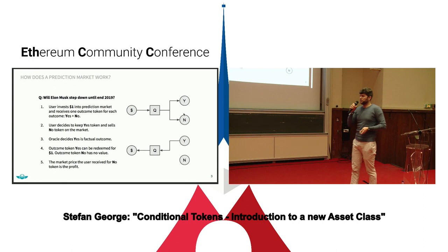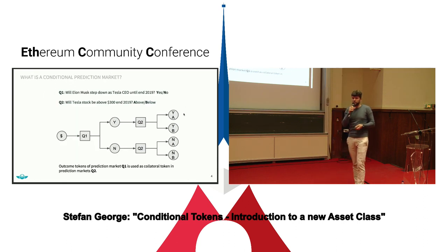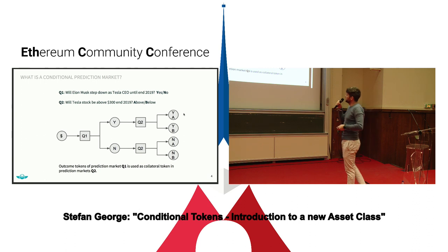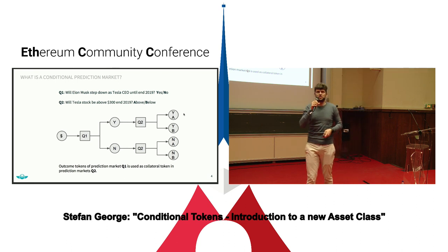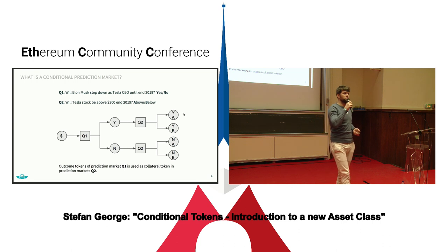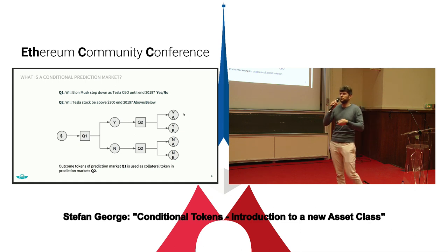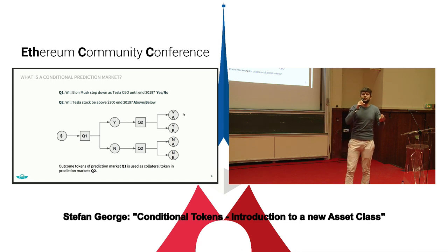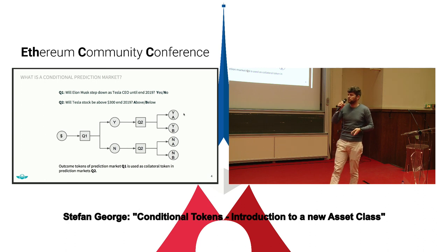So based on this, how can we create a conditional prediction market? It's actually also quite straightforward. What we have now is two prediction markets. Let's say we want to predict if the Tesla stock is above or below $100 at the end of 2019, under the condition that Elon Musk was stepping down — yes or no. So what we essentially do is create three markets. The first market is just a prediction market on if Elon Musk will step down, yes or no. Then we use the yes and the no token as collateral in the other markets. The second market is: will Tesla stock be above $100, yes or no?